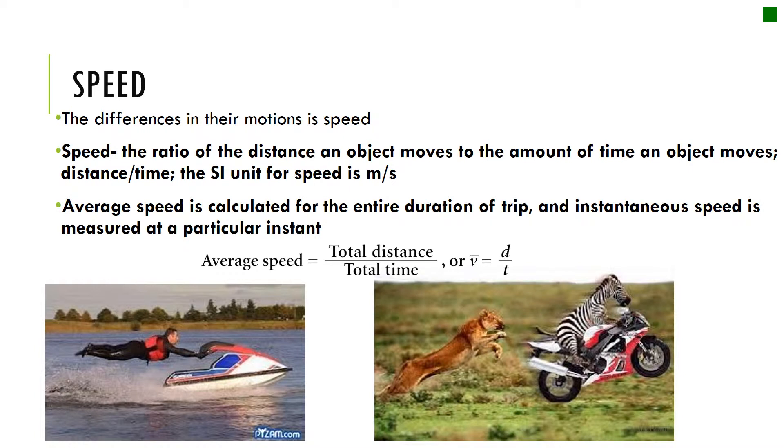Speed is the ratio of the distance an object moves to the amount of time an object moves. It's measured in meters per second, m/s for short. You could measure this in kilometers per hour if you had a larger unit. Make sure to write down this equation because we're going to be using this a lot.